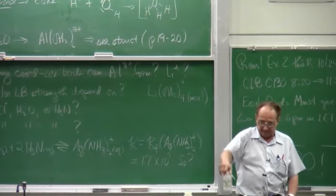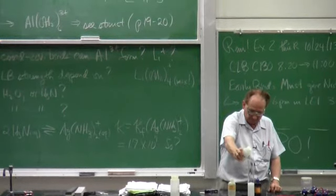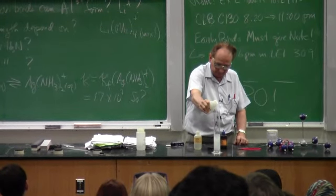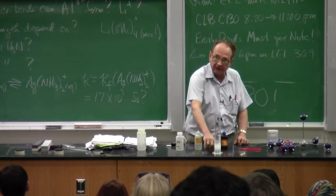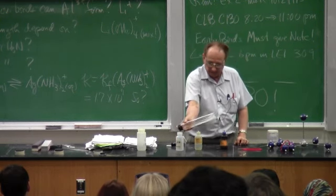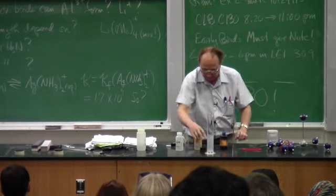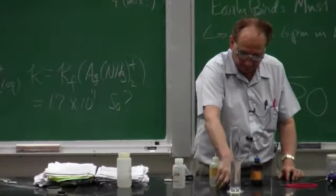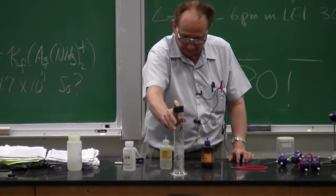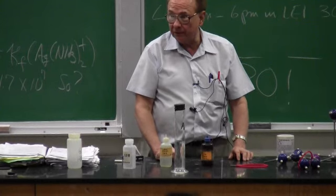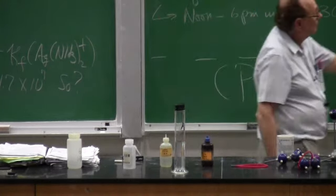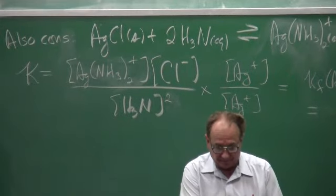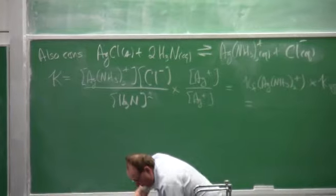Six molar ammonia. Something happening to the silver chloride? Where's my silver chloride? It reacted with ammonia to become this stuff while the chloride ions were given to the solution.